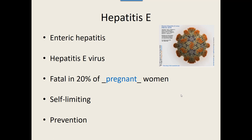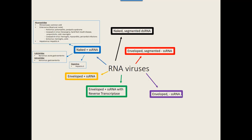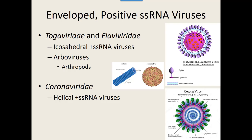Now we're going to move on to the enveloped viruses — they all have a membrane that they stole — and it's still positive-sense single-stranded RNA. We have the Togaviridae group and the Flaviviridae group, as well as one other. We'll talk about the Coronaviridae in a little bit, but we're going to start with the Togaviridae and the Flaviviridae.